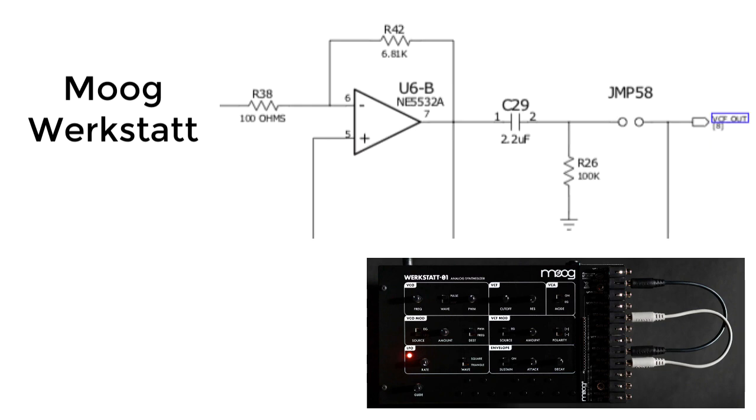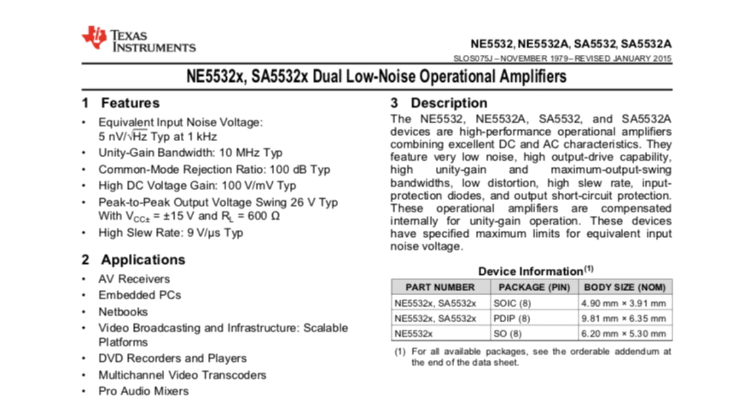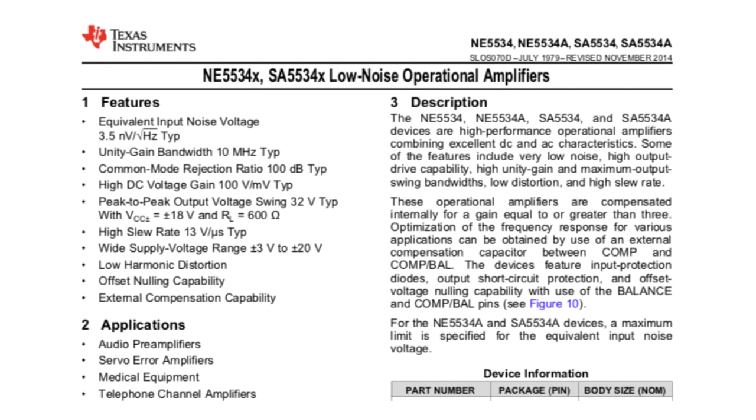If you need higher fidelity audio, you can go with the 5532, which is a dual op-amp, or the 5534, which is confusingly not a quad op-amp. The 5534 is a single op-amp. Although it has very low distortion characteristics,